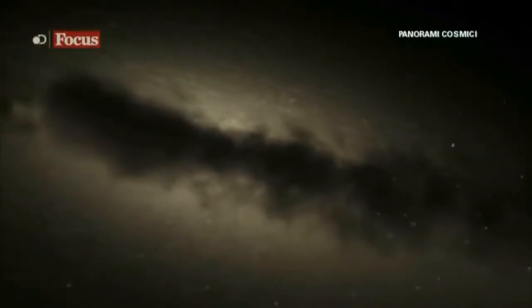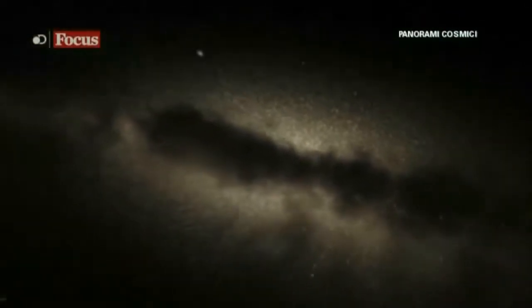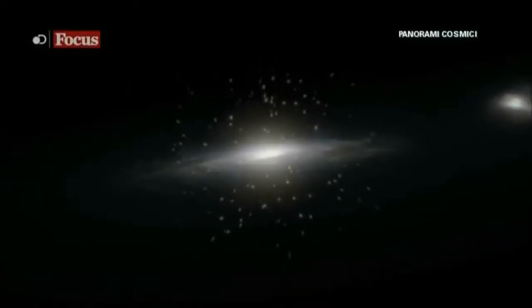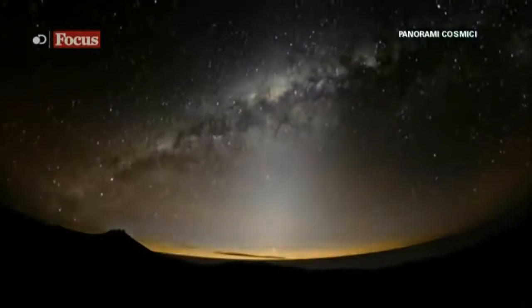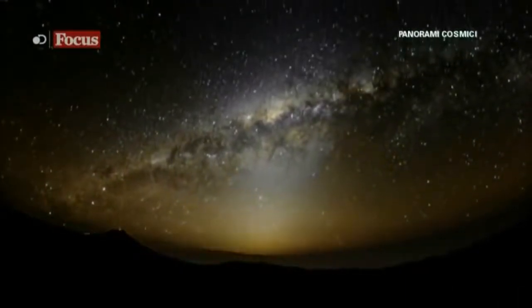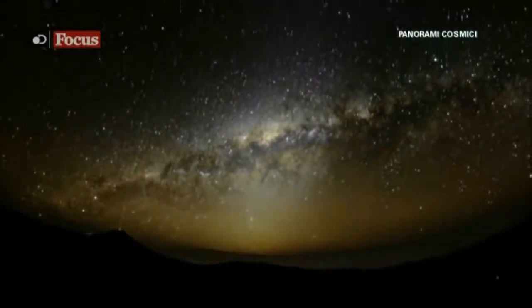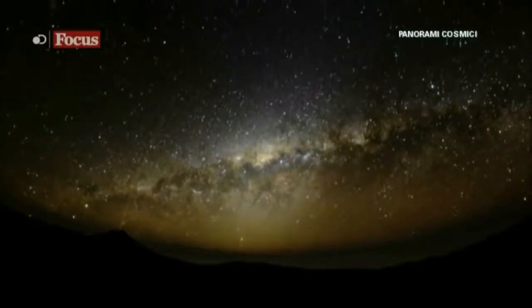Basandosi sul lavoro di William Herschel, gli astronomi del XIX secolo verificarono che il nostro sistema solare si trova all'interno di una galassia di stelle, dalla forma di un disco gigante.